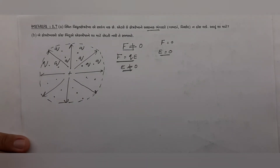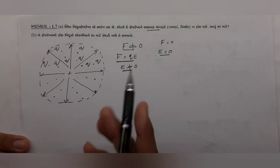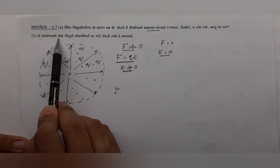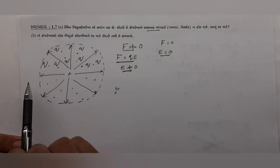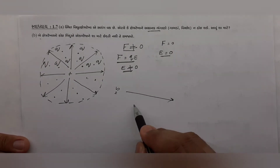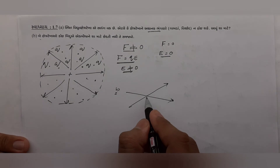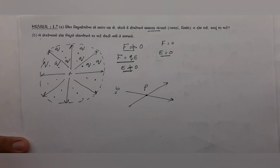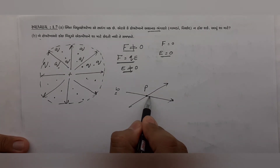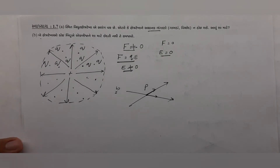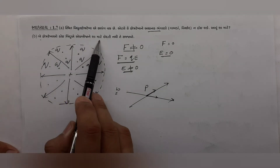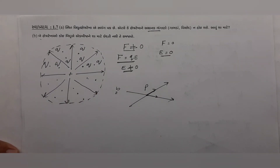Part B (Gujarati): બે ક્ષેત્ર રેખાઓ કોઈ બિંદુએ એક બિંદુ પાસે ક્ષેત્ર બે અલગ દિશાઓ ધરાવે છે, અને ક્ષેત્ર બે અલગ દિશાઓ એક જ બિંદુ પાસેથી ધરાવે — તે શક્ય નથી. એટલા માટે કોઈ પણ બે ક્ષેત્ર રેખાઓ એક જ બિંદુએ છેદી શકે નહીં. જો છેદે તો બે દિશા એક બિંદુ પર મળે, અને એક બિંદુ પે બે દિશા શક્ય છે નહીં.